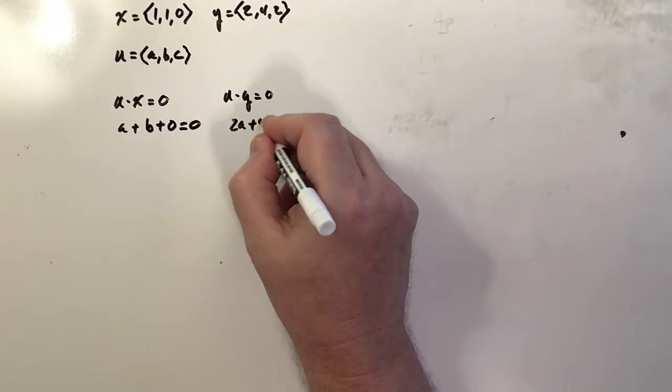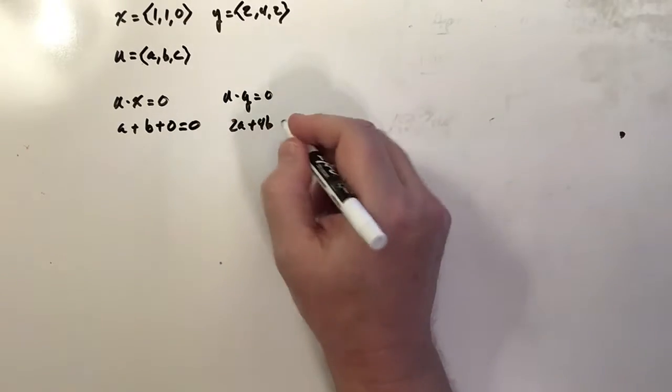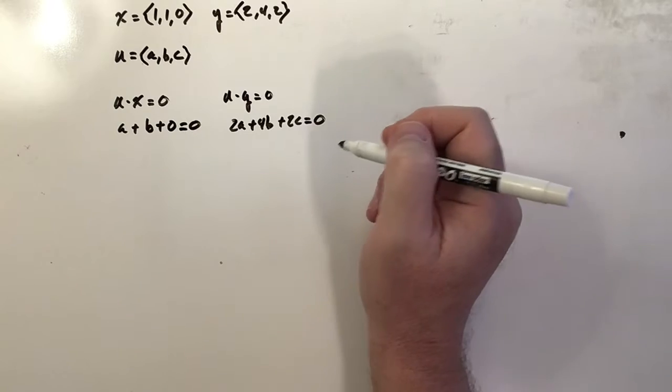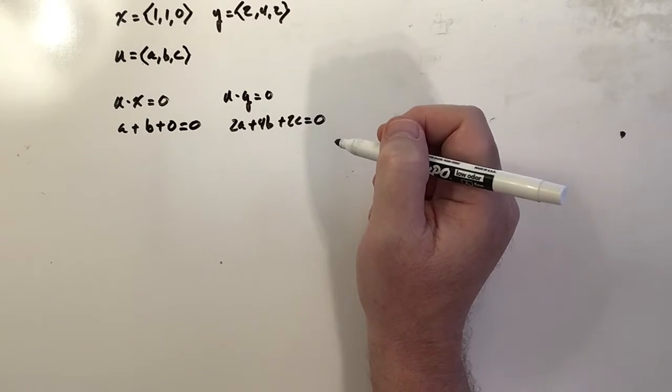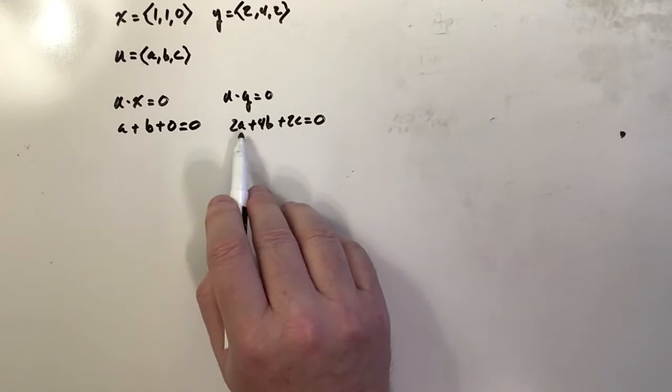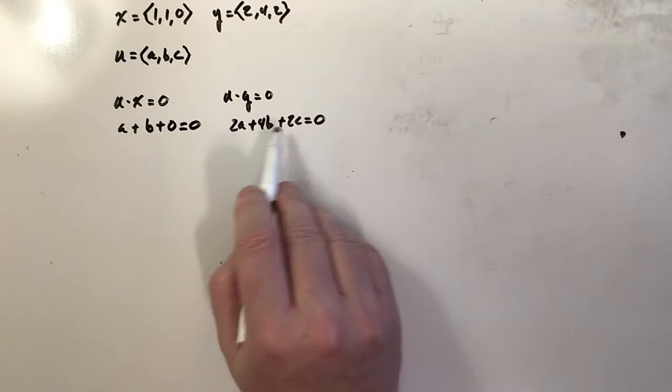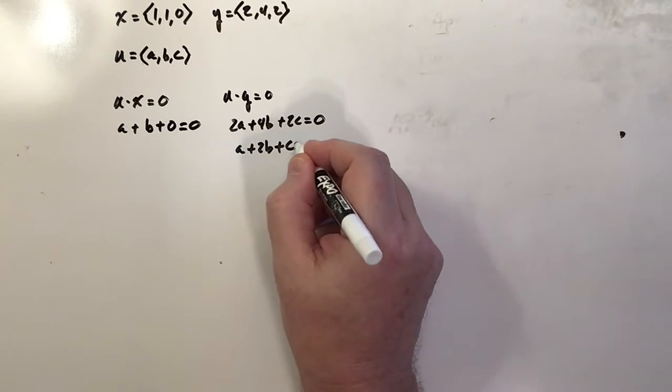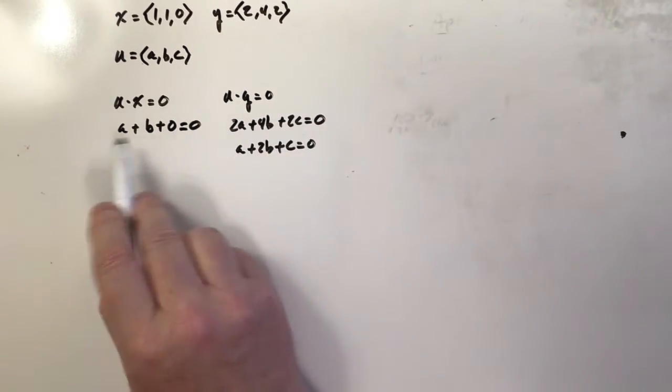And this is where getting multiple solutions comes in. I only need to solve this system, but I don't necessarily care about the coefficients. So I'm going to take this 2, 4, 2 and make it a 1, 2, 1. So a plus 2b plus c is equal to 0.